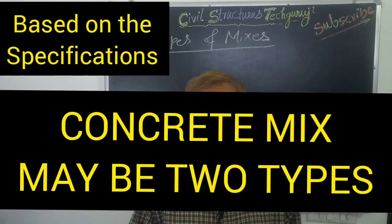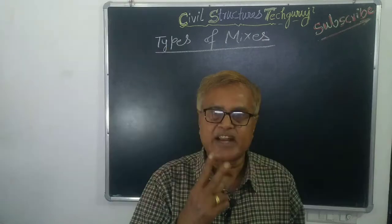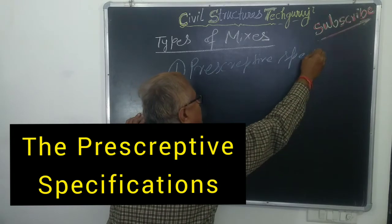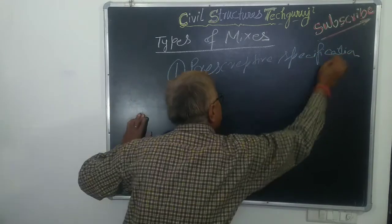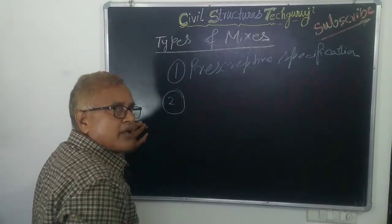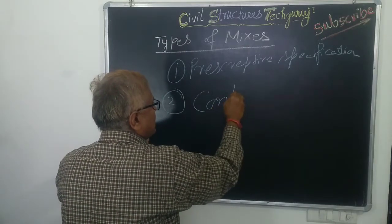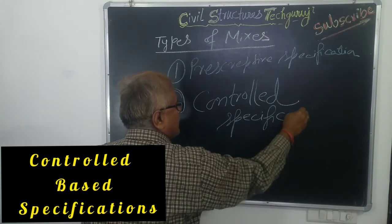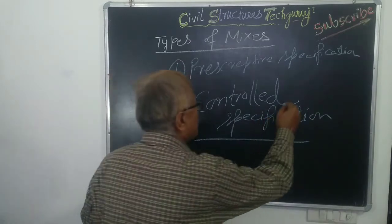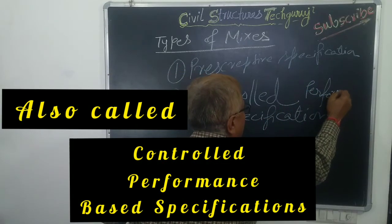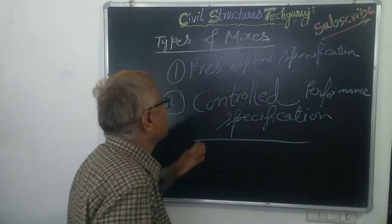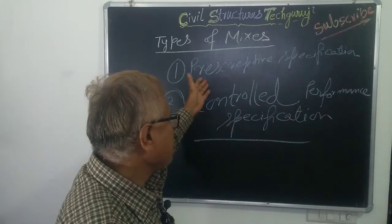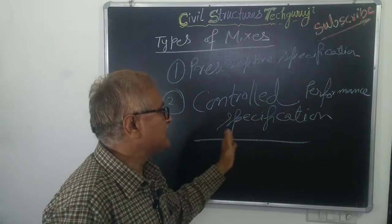Based on the specification, the mix may be of two types. The first type is prescriptive specification, and the second one is controlled performance specification. So concrete may be either prescriptive specification based or controlled performance specification based.